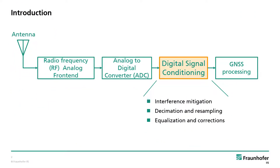In a typical satellite navigation receiver, the digital signal conditioning is done after the analog-to-digital conversion. It could address interference mitigation, decimation, resampling, signal corrections, and equalization tasks to provide the best possible quality signal for navigation processing. Therefore, the better the signal conditioning, the better the receiver can acquire and track the satellite signals.